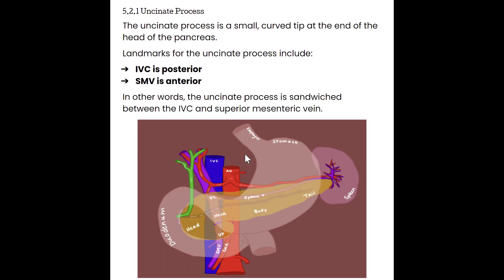Starting with the uncinate process — it is a very small curved tip at the end of the head of the pancreas. The size of the uncinate process is going to vary from person to person. The major landmarks for the uncinate process include the IVC posterior to it and the superior mesenteric vein anterior to it. So the uncinate process is kind of sandwiched between the IVC and the SMV.